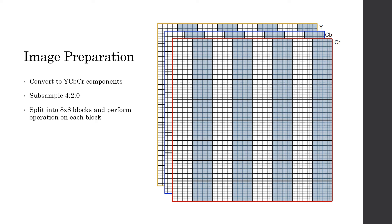The first stage is image preparation. We first need to convert the RGB image into its Y, CB, and CR components. The Y component represents the luminosity of the image, or the intensity of each pixel from the color. The CB and CR components represent the blueness and redness of the image. The JPEG compression algorithm takes advantage of the fact that the human eye can't see chrominance very well, so we downsample the CB and CR in the image, and humans won't be able to recognize the difference.